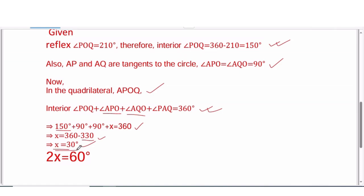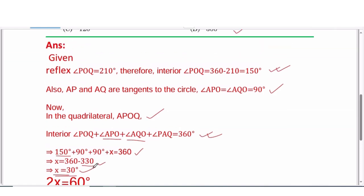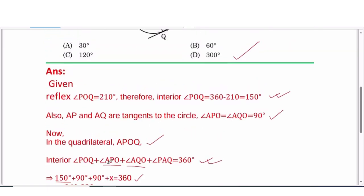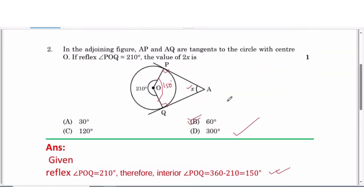Therefore the value of x is 30 degrees, and the value of 2x will be 30 into 2, that is equal to 60 degrees. Therefore option B will be the correct answer.